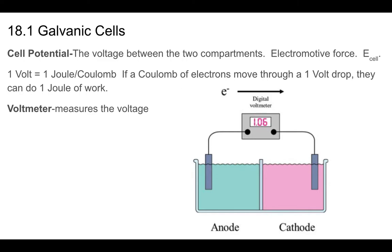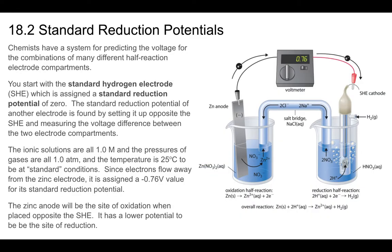Electrons flow from the anode to the cathode because oxidation occurs at the anode — losing electrons — while reduction occurs at the cathode — gaining electrons. The left side loses electrons, the right side gains electrons, and ion flow between the two sides through the salt bridge maintains electrical neutrality and completes the circuit.